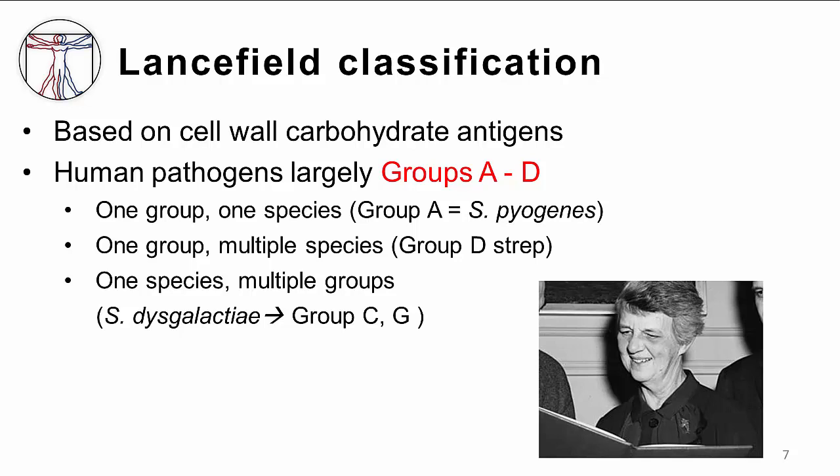However, some groupings contain a number of species, such as group D strep, which can be further broken down into the enterococcus and non-enterococcus strep species. There are even some species, like strep dysgalactiae, which contains several subspecies that carry different carbohydrate antigens in their cell walls, and therefore may be classified with multiple Lancefield groupings. Finally, there are some strep species not addressed by the Lancefield system at all because they do not have carbohydrate antigens in their cell walls — strep pneumoniae is one example. So while the Lancefield classification system is still commonly used, it is important to recognize its complexities and limitations.